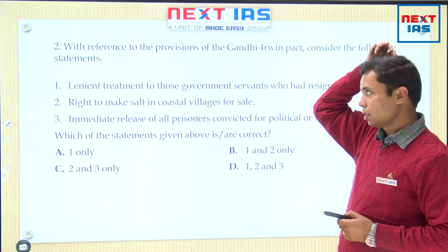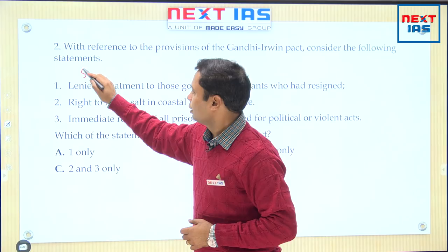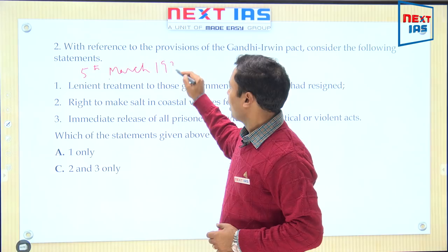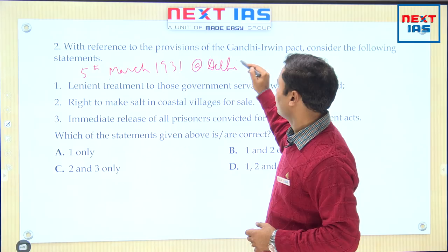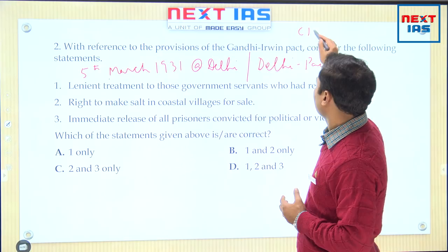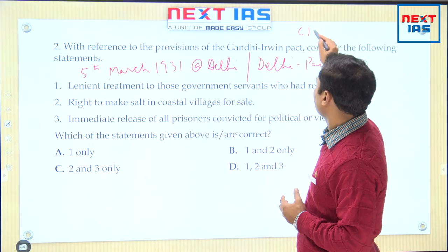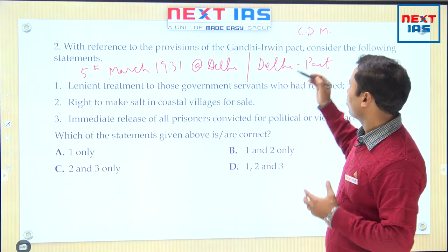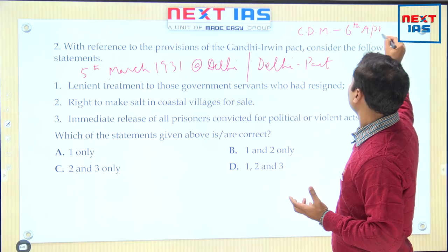Next: with reference to the provisions of the Gandhi-Irwin Pact, consider the following statements. The Gandhi-Irwin Pact was signed on 5th March 1931 at Delhi, so it is also known as the Delhi Pact. Before this pact, there was a movement going on — the Civil Disobedience Movement — which was launched by Gandhi by breaking the salt law on 6th April 1930. Salt was a commodity taxed by the government, and since it was consumed by each and everyone, rich and poor, Gandhi had launched the movement on this issue.